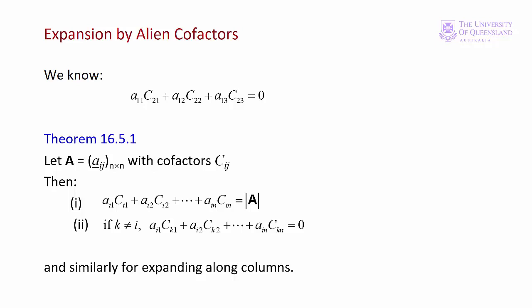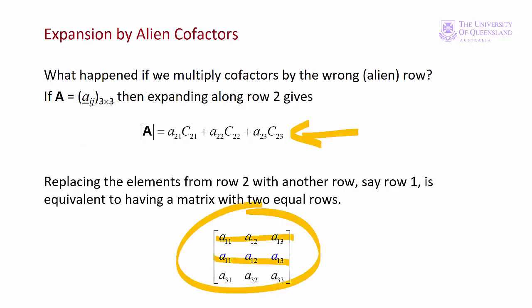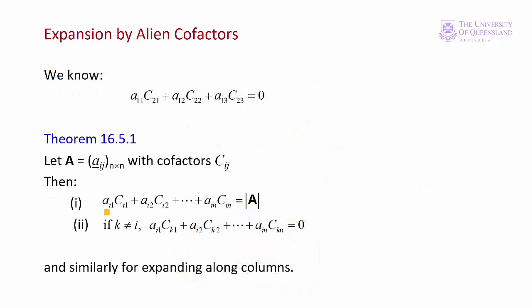In the formula for the determinant, if we expand along a row, the row index numbers for the elements and the cofactors are the same — for example, elements in row 2 and cofactors in row 2. In the general form the rows are given by i, and they are equal, which gives us the determinant. If we multiply the elements of a row by the cofactors from a different row — alien cofactors — then i and k are not equal, and the result is zero. Theorem 16.5.1 is just a formal statement of what we've seen, and it also holds if we expand down columns.